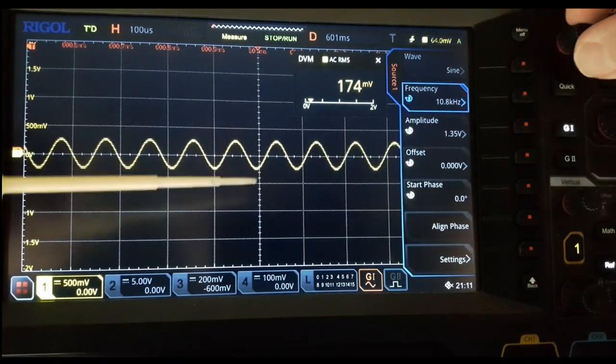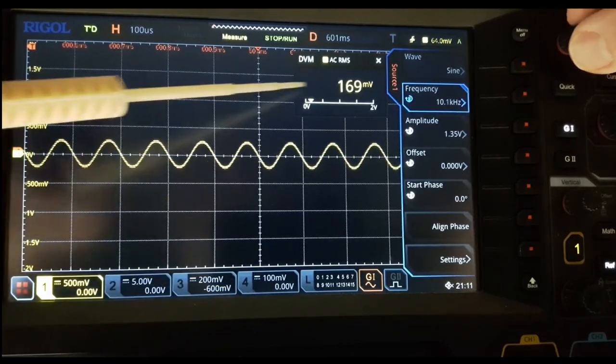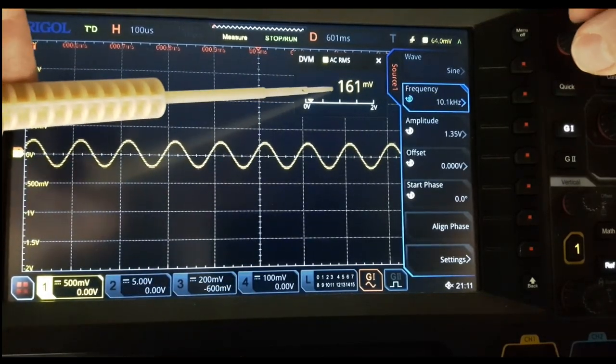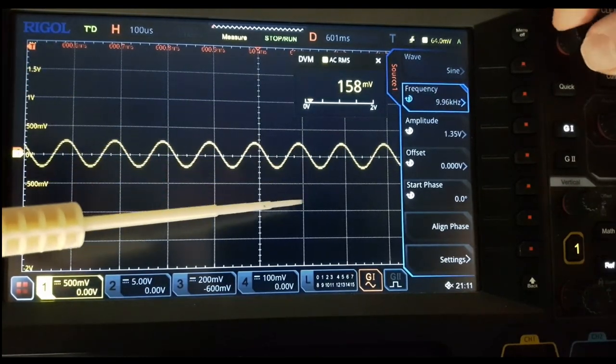As I go up here to the knob to adjust the frequency output, if I go down, we'll see that I'm going in the wrong direction because our voltage here is going down. We want our voltage to go up.